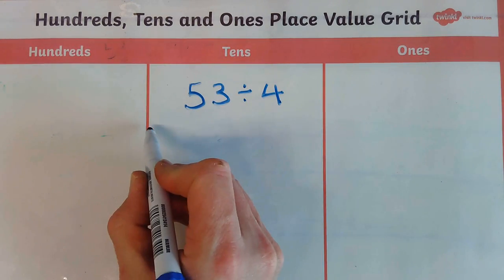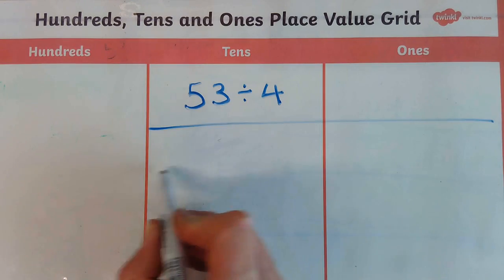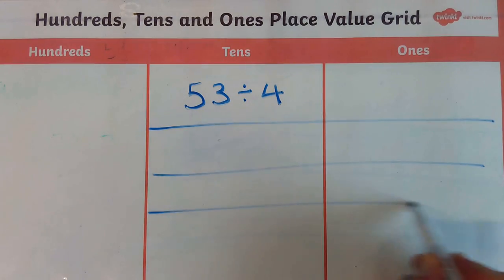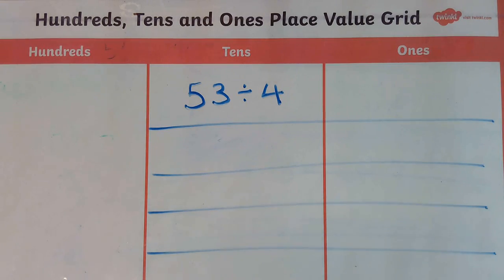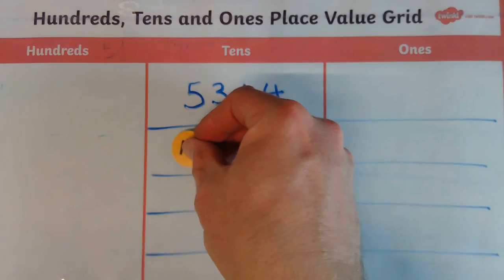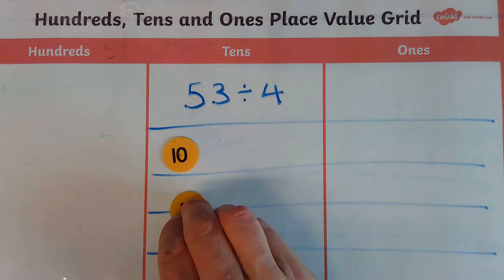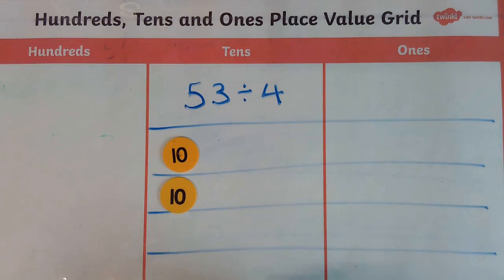Now to do this I'm going to start by making 1, 2, 3, 4 spaces for me to work in. So 4 because I'm divided by 4. And I'm going to start with the tens so I'm going to use counters but equally I could draw these. So I'm going to put 1 ten into the first row, 1 ten into the second row, 1 ten into the third row, 1 ten into the fourth row. So I've got 40 so far.